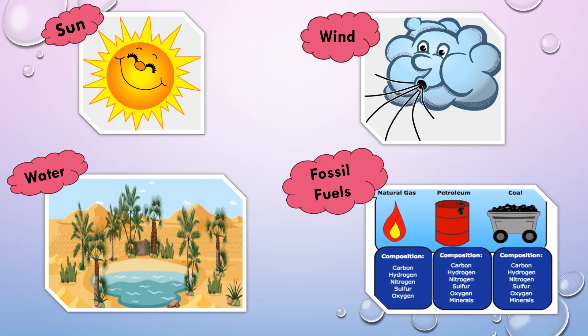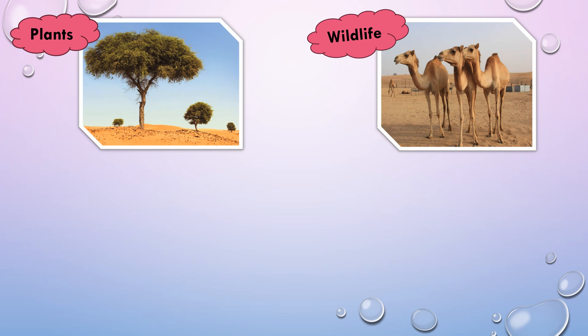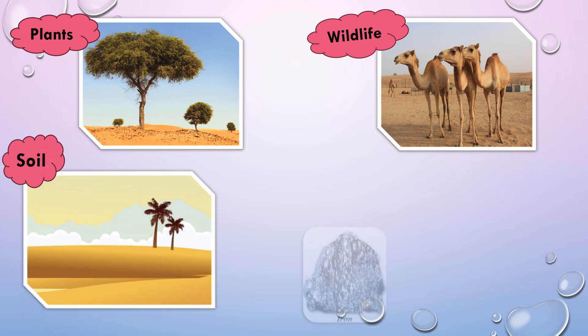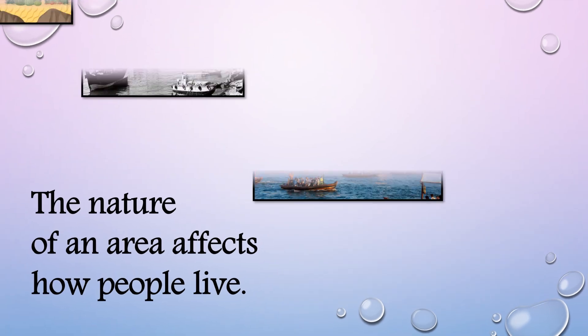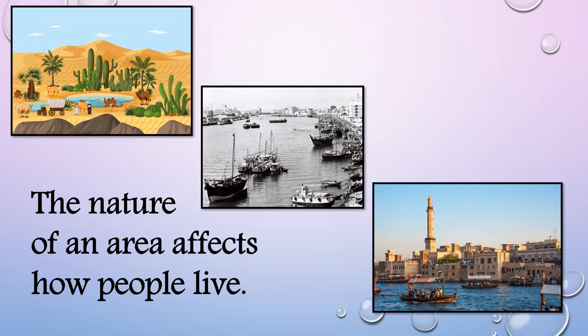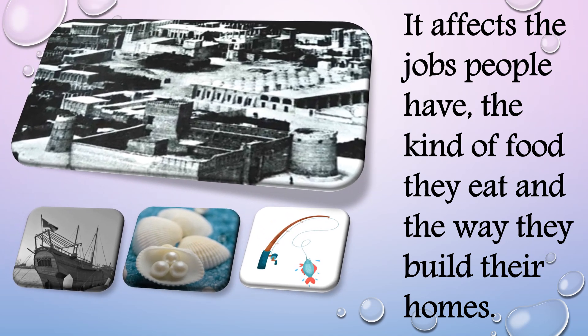Examples of fossil fuels include natural gas, petroleum, and coal. Other natural resources include plants, wildlife, soil, and minerals like iron, copper, and gold. These are some of the examples of natural resources.